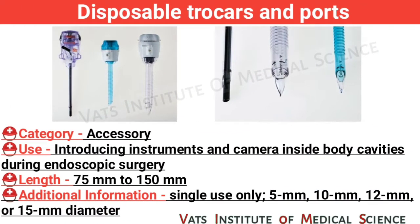Disposable trocars and ports. Category: accessory. Use: introducing instruments and camera inside body cavity during endoscopic surgery. Length: 75 mm to 150 mm. Additional information: single use only, available in 5 mm, 10 mm, 12 mm, or 15 mm diameter.